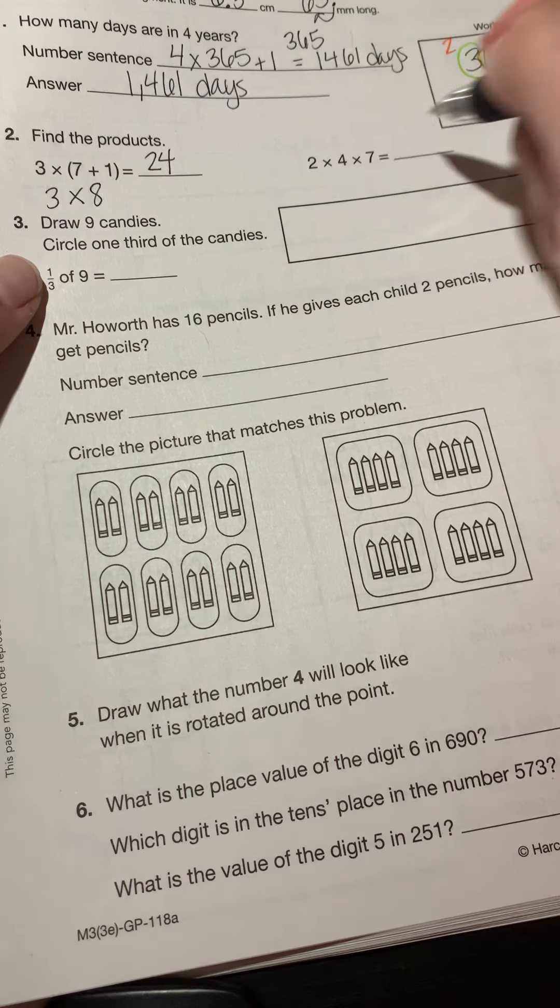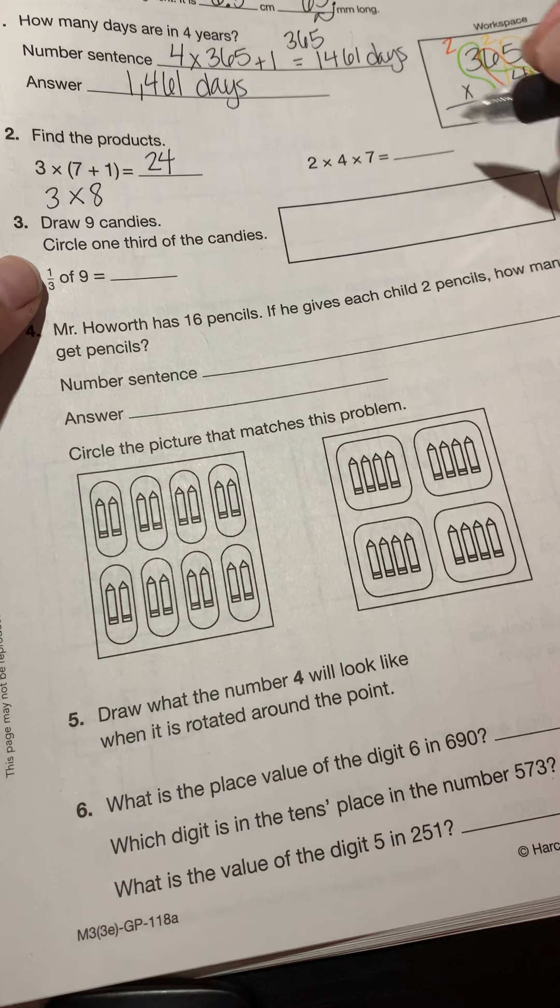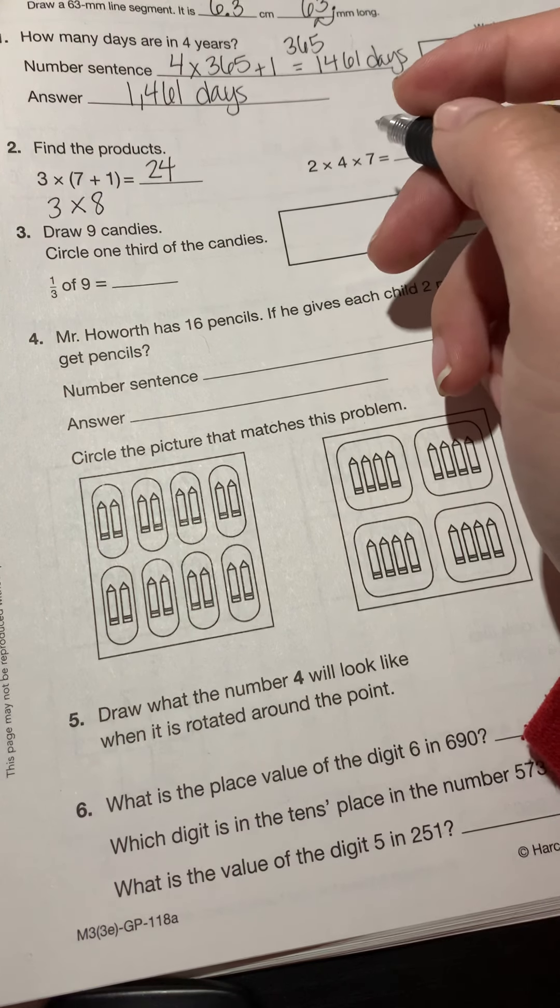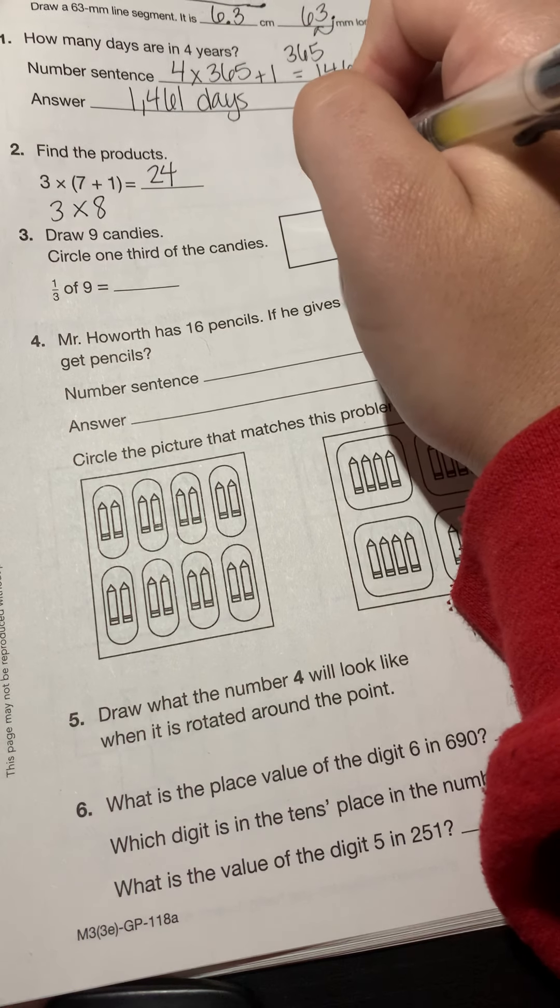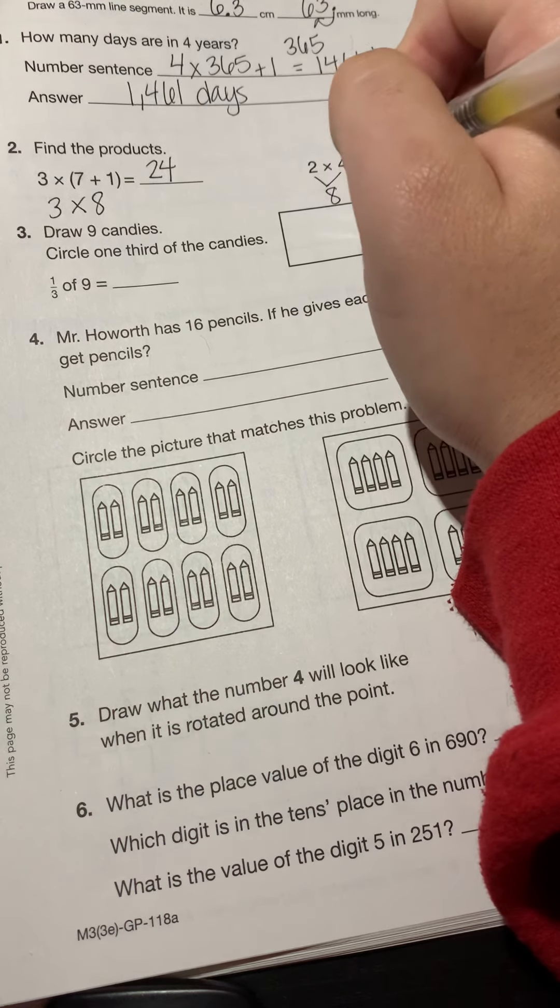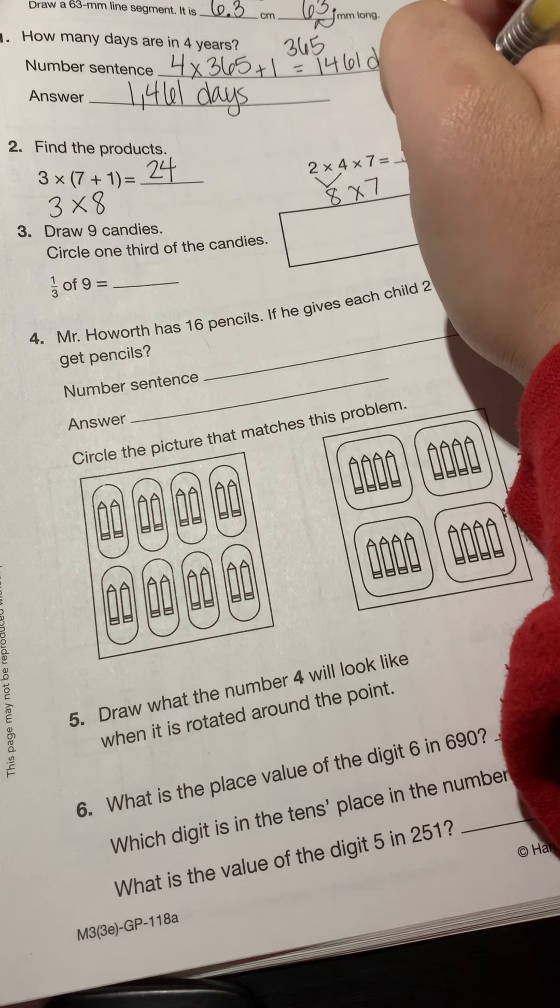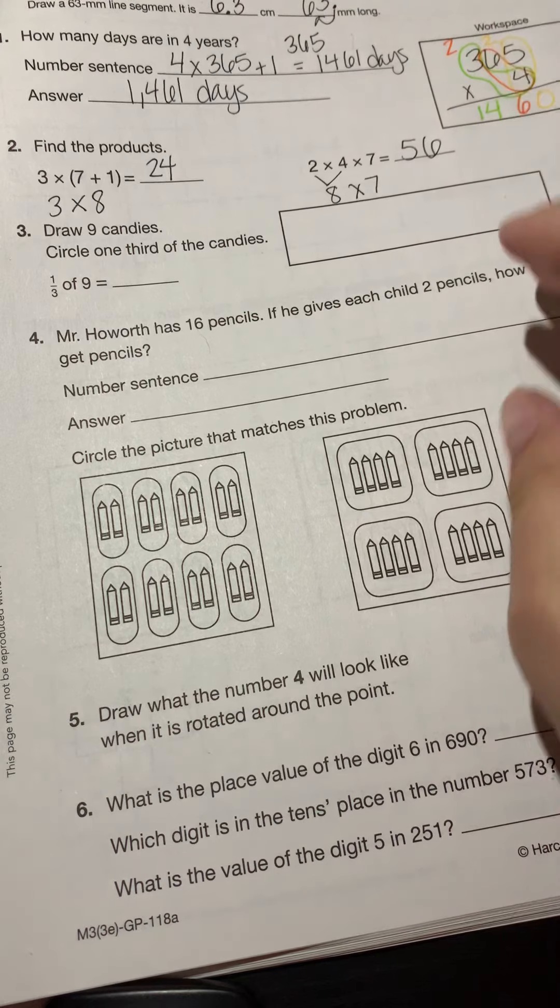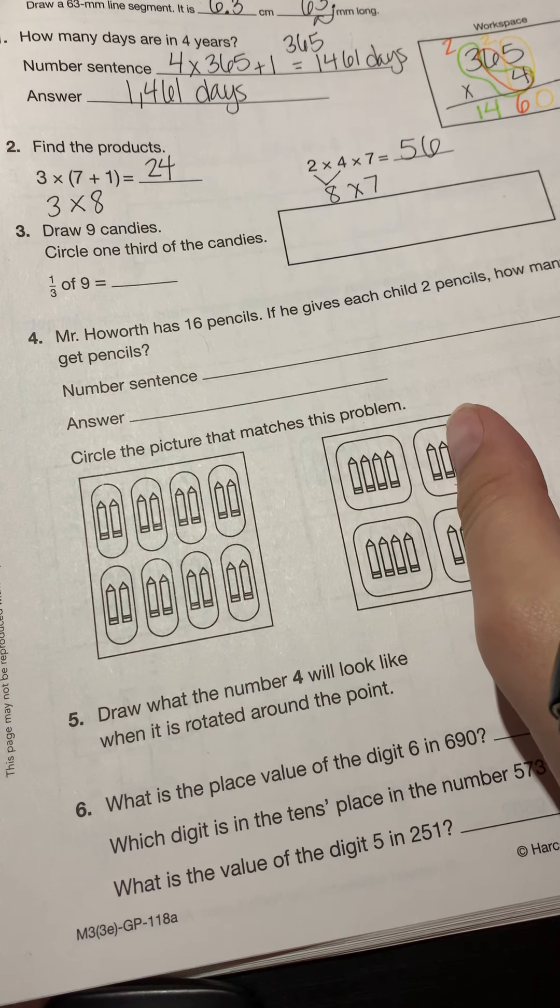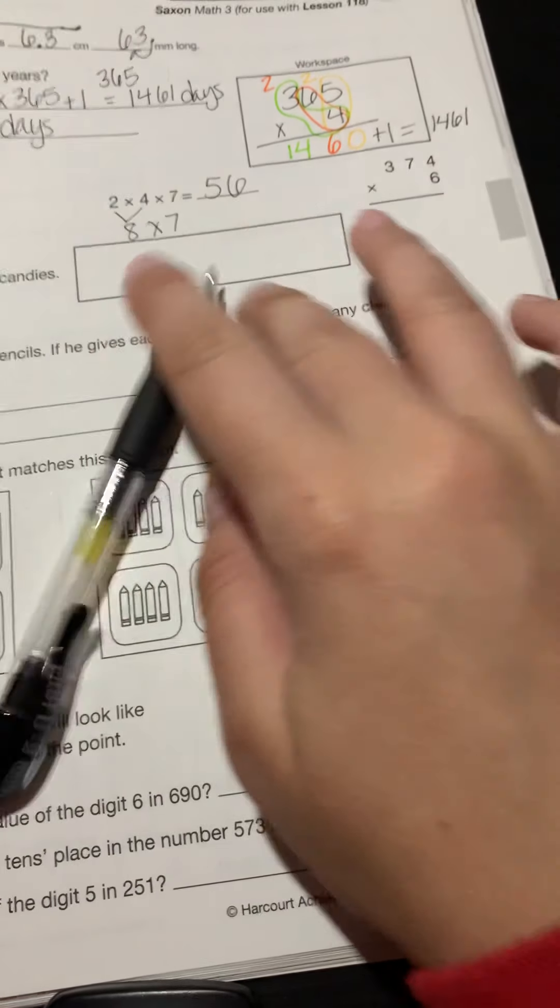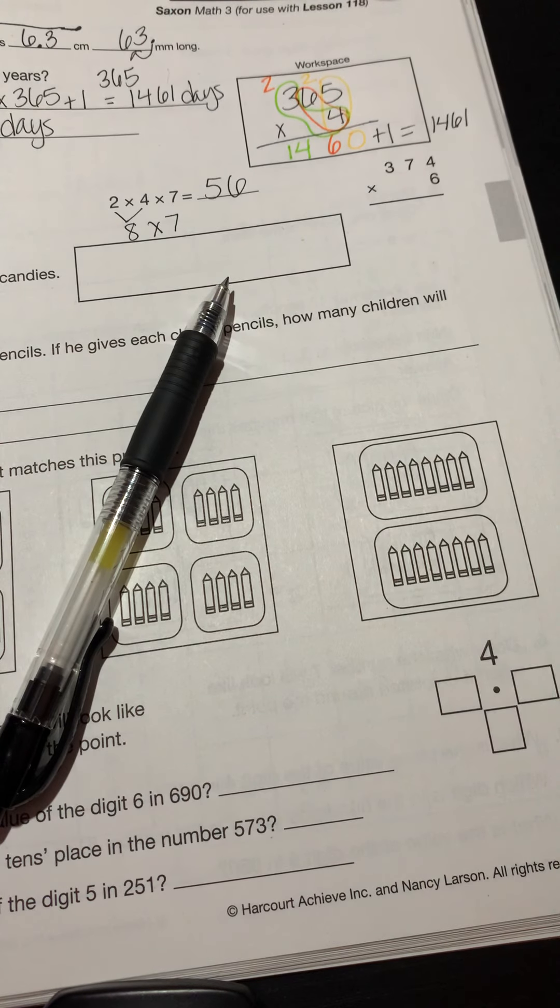Now I have two times four times seven. You can actually multiply whatever you want to multiply first. But what's two times four? Eight. What's eight times seven? 56. Perfect. So notice it looks kind of scary at first. But once we simplify it, these are just simple multiplication facts that we already know.